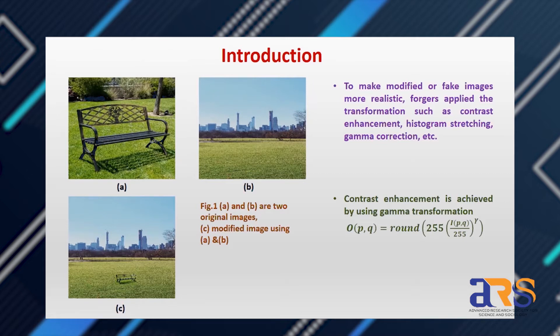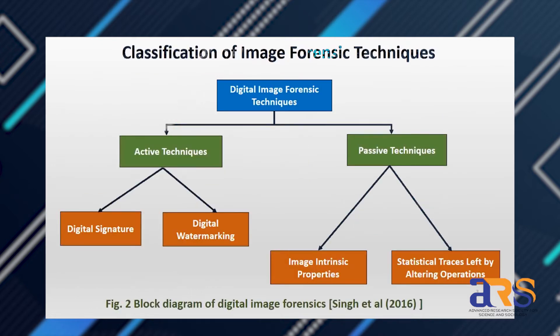Here is an example of copy-paste image forgery where images A and B are the original images and C is the modified image. The forgers applied transformations such as contrast enhancement and gamma correction to cover inconsistencies. We focus on contrast enhancement forensic techniques; contrast enhancement can be achieved using Microsoft Picture Manager or gamma transformation, where the equation is given by OP(Q) = IP(Q) raised to gamma.